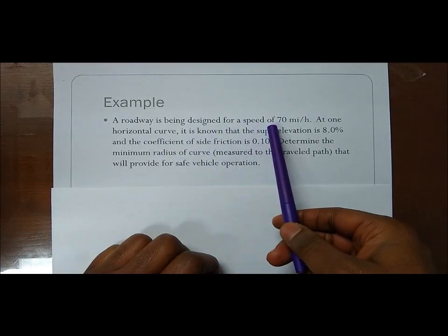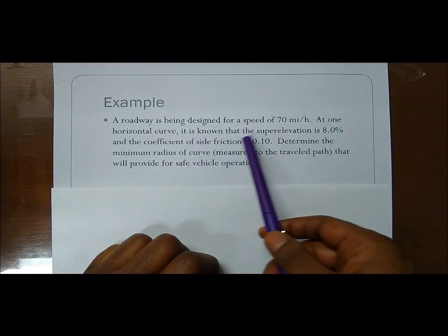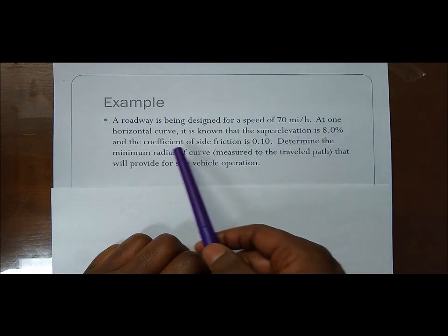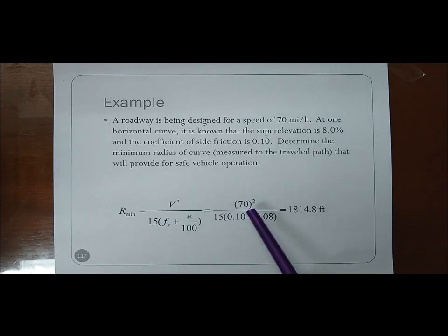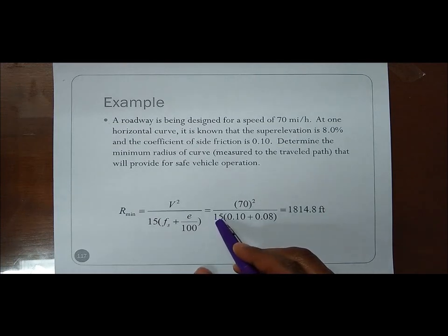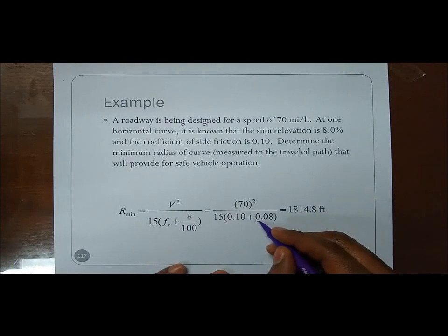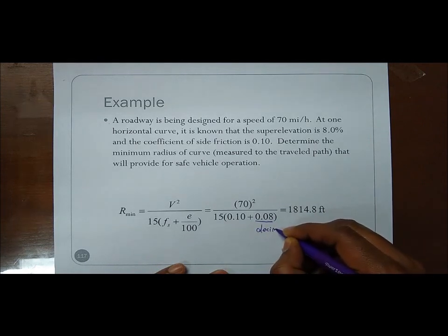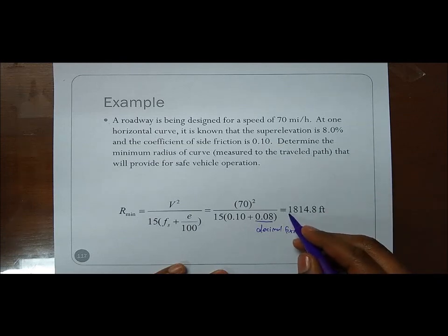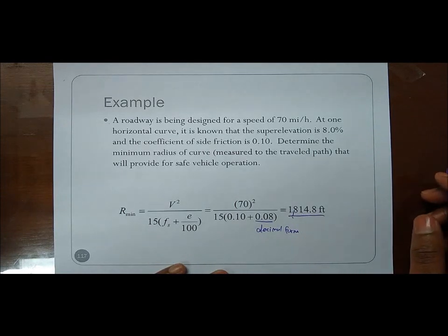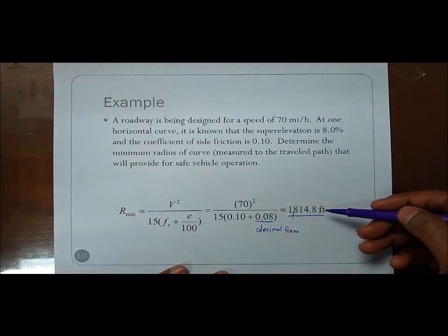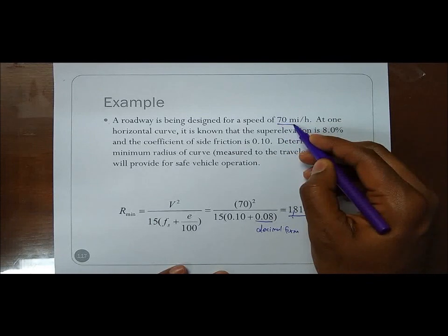Here's a straightforward example: we're designing for a speed of 70 miles per hour at one horizontal curve. The superelevation is 8 percent and the coefficient of side friction is 0.1. We need to determine the minimum radius for safe vehicle operation. Plugging into the formula — 70 squared divided by 15 times (0.1 + 0.08) — the minimum radius allowed for this roadway is 1,814 or 1,815 feet. Anything lower would not be safe at 70 miles per hour.